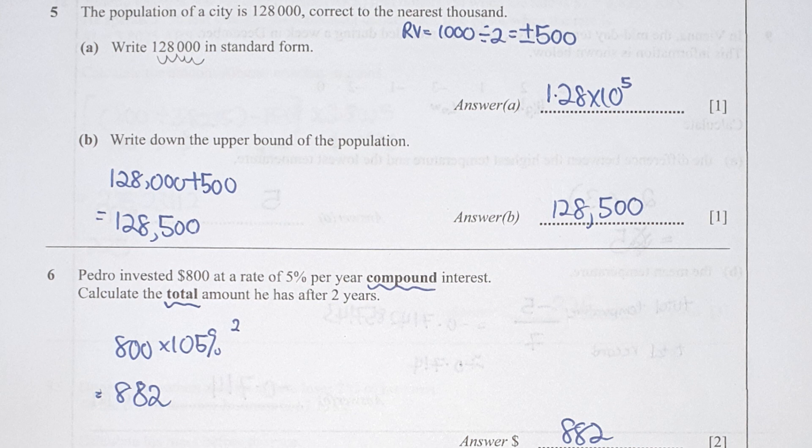For section B, the key information is hidden in the first sentence: corrected to the nearest thousand. So you take 1000 divided by 2 to get plus or minus 500. To get the upper bound, simply take 128,000 plus 500, which gives 128,500.